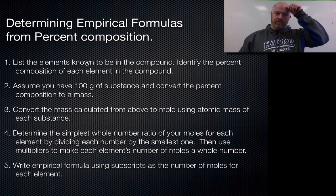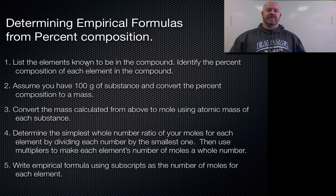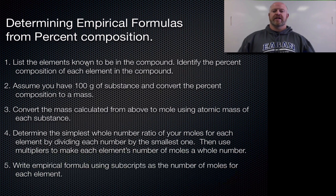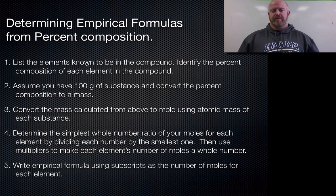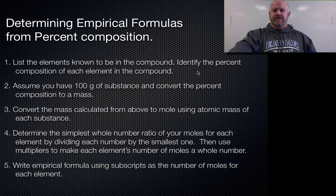Now from that, what we can do is actually use percent composition, which we started with the other day, and use percent composition to determine empirical formulas because we know the percent by mass of all the substances in there. So to do that, we have to go through a five-step process. Let's go through the process verbally first, and then we'll do a practice one with it. First thing, list the elements known to be in the compound. Identify the percent composition of each element in the compound.